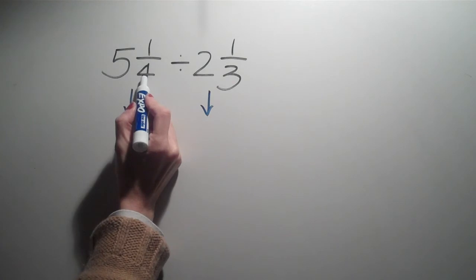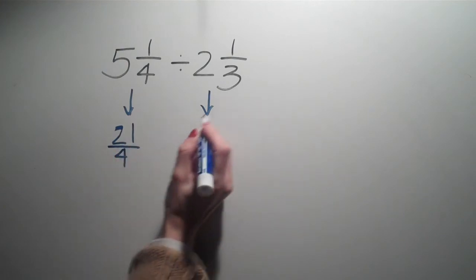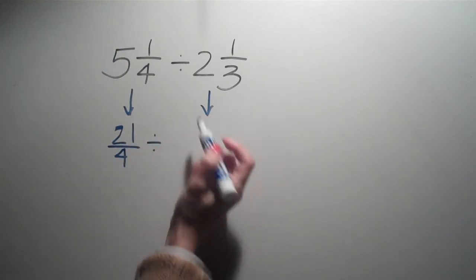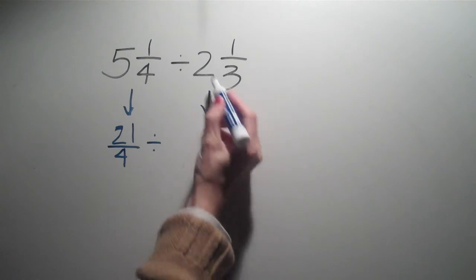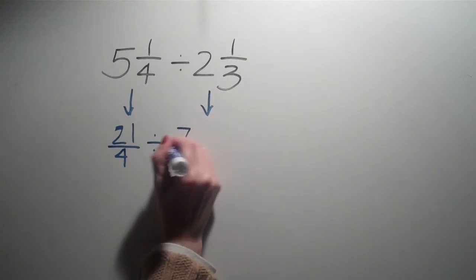5 times 4 is 20, plus 1 is 21, over 4, divided by, now I'm not flipping yet. I'm just changing their form. 2 times 3 is 6, plus 1 is 7, over 3.